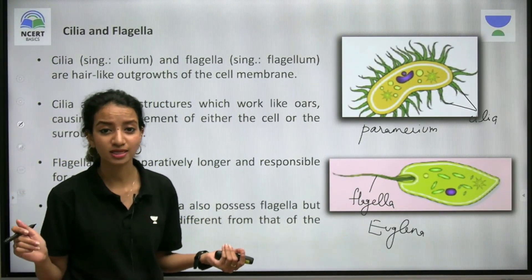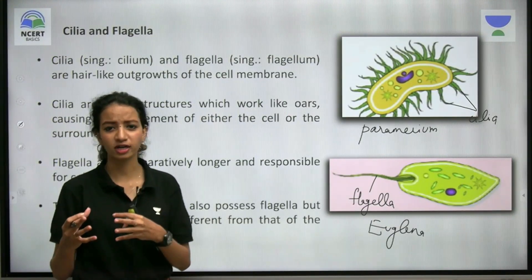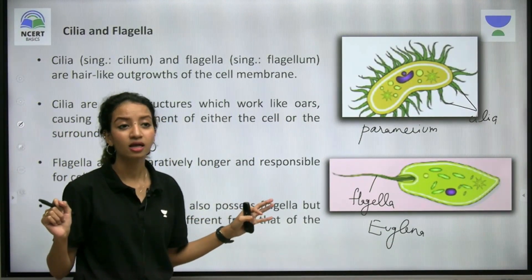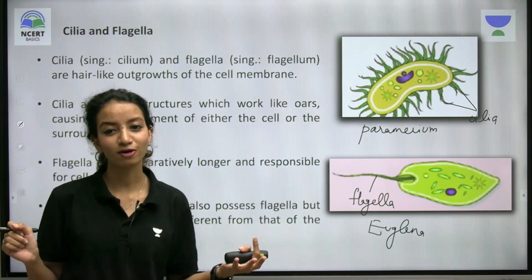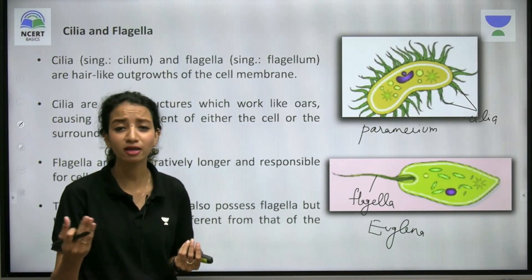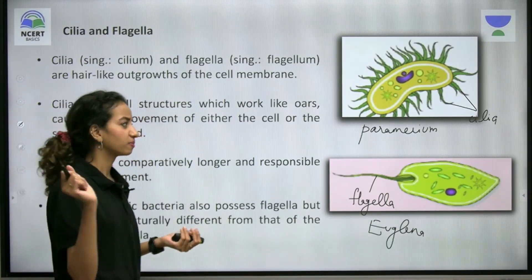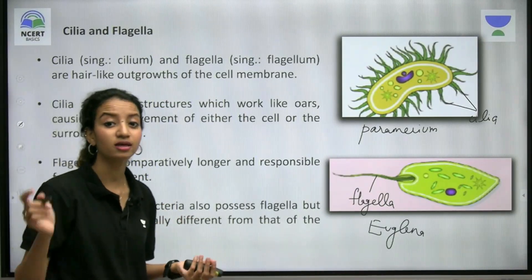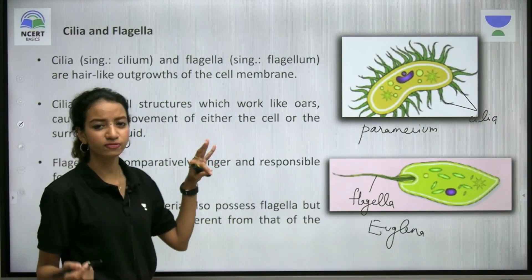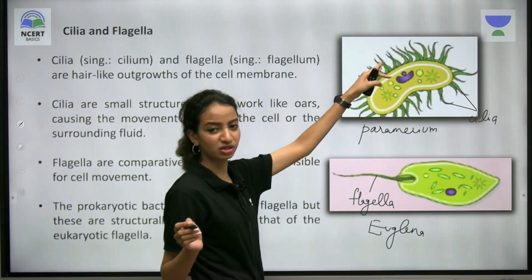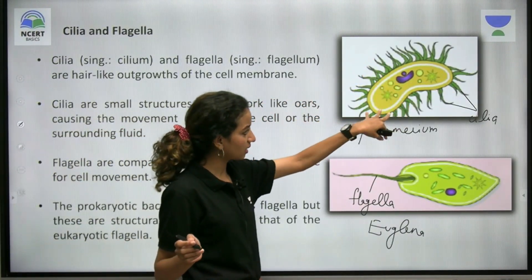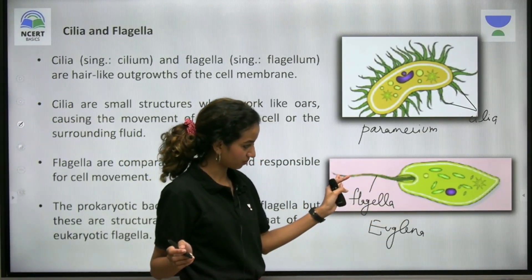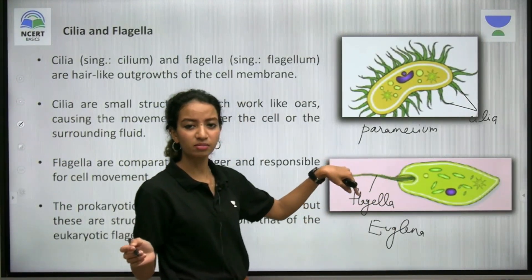Cilia is the singular form and cilia is also the plural — flagella is the plural and flagellum is the singular form. They are simply outgrowths of the cell membrane — extensions from the membrane. In paramecium the entire cell membrane has these outgrowths that are cilia, while in euglena there is just one flagellum arising as an extension of the cell membrane.